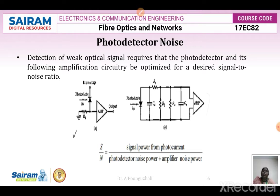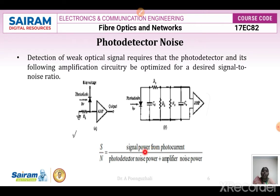For photodetector noise: when a photodetector detects a weak signal, it requires that the photodetector and the following amplification circuitry be optimized for a desired signal-to-noise ratio. The photodetector should be capable of detecting a weak optical signal. In the equivalent circuit between the photodiode and your amplifier, R_S is the source resistance, C_D is the diode capacitance, R_L is the load resistance, and R_A and C_A are the amplifier resistance and capacitance. S is the signal power from the photocurrent, and N is the photodetector noise power plus the amplifier noise power.